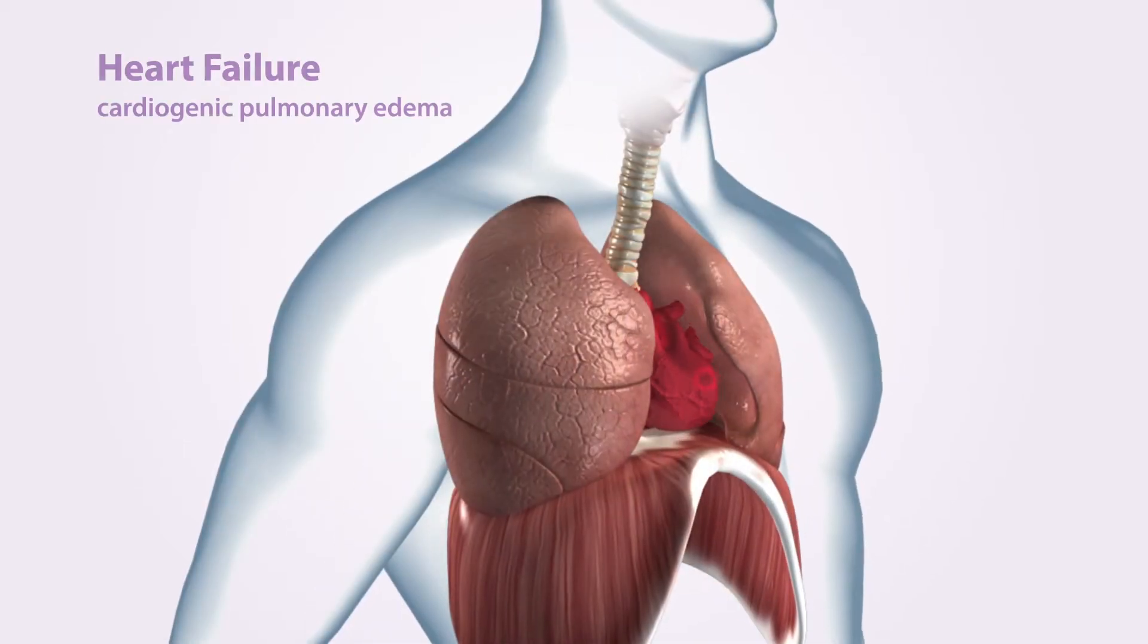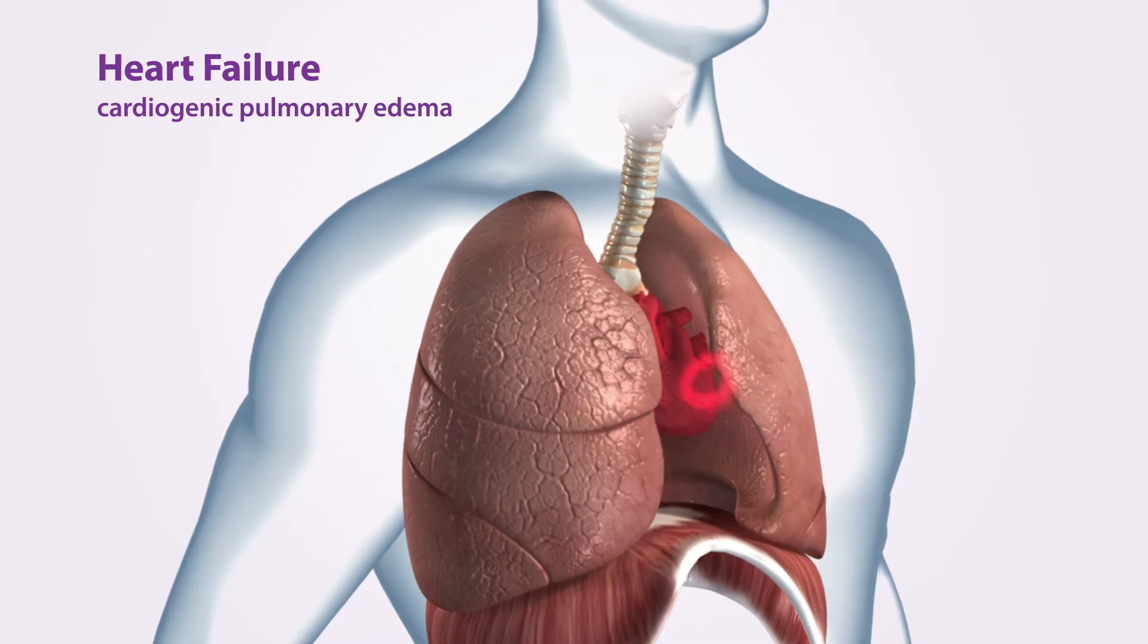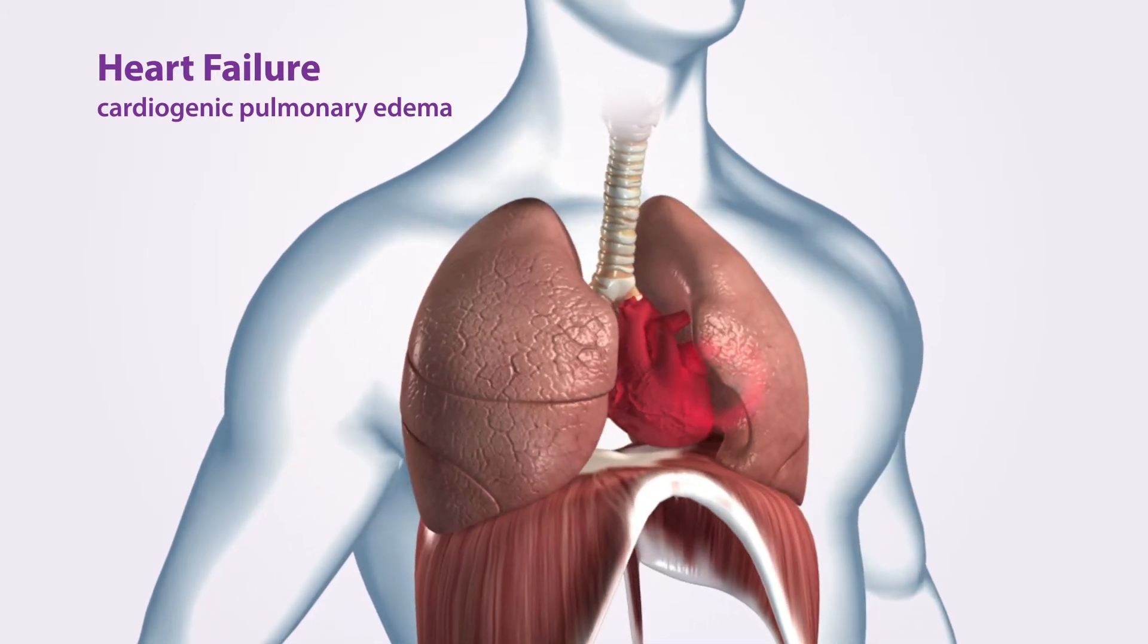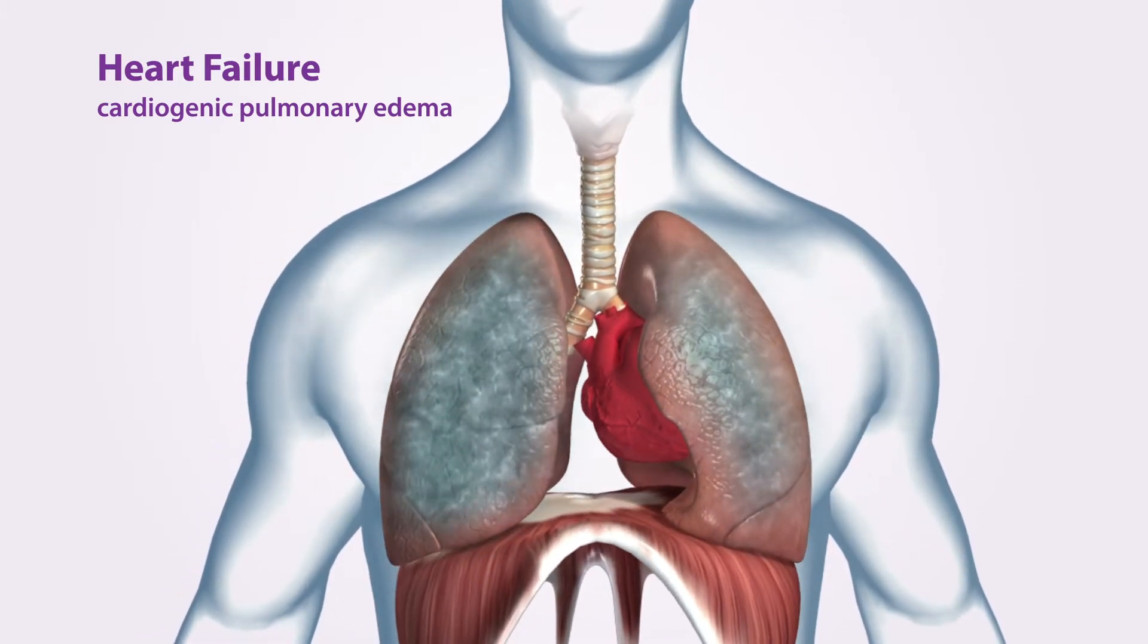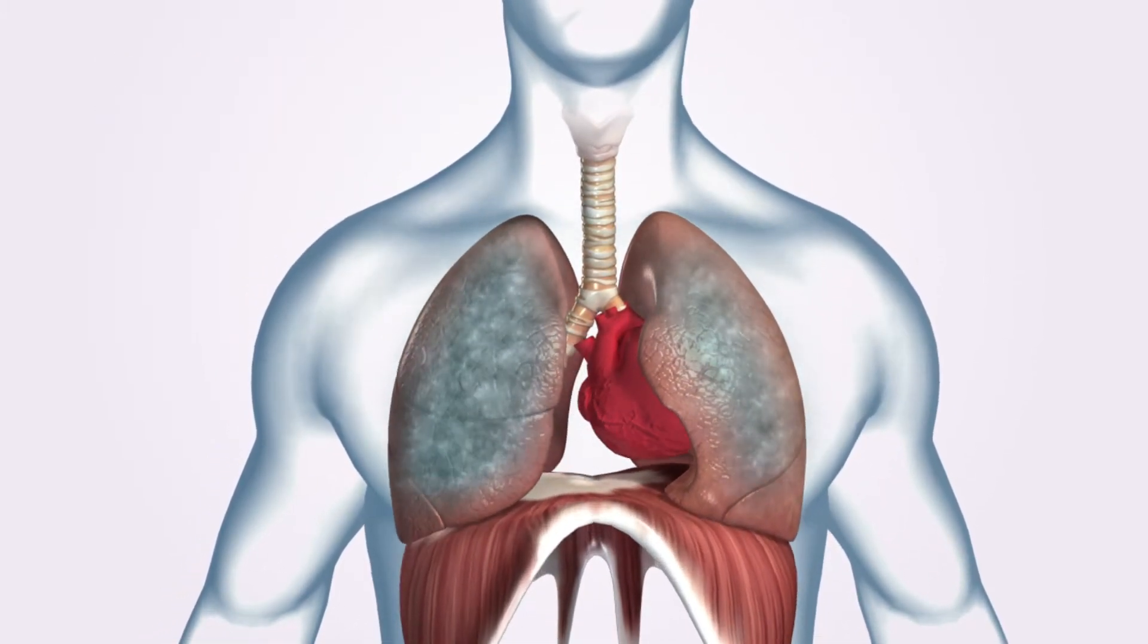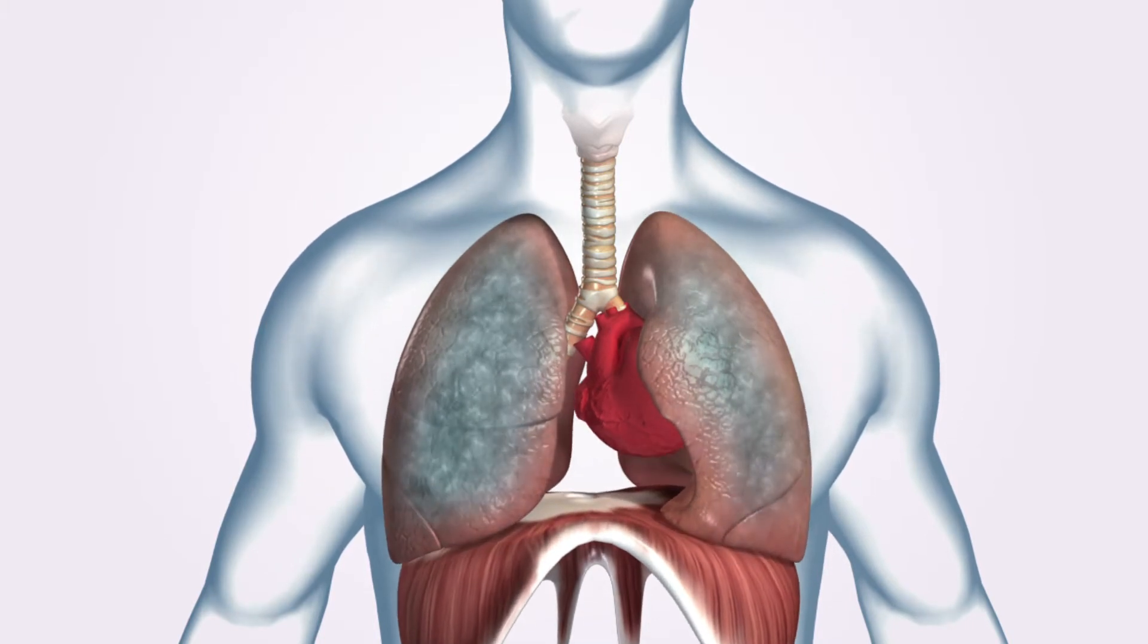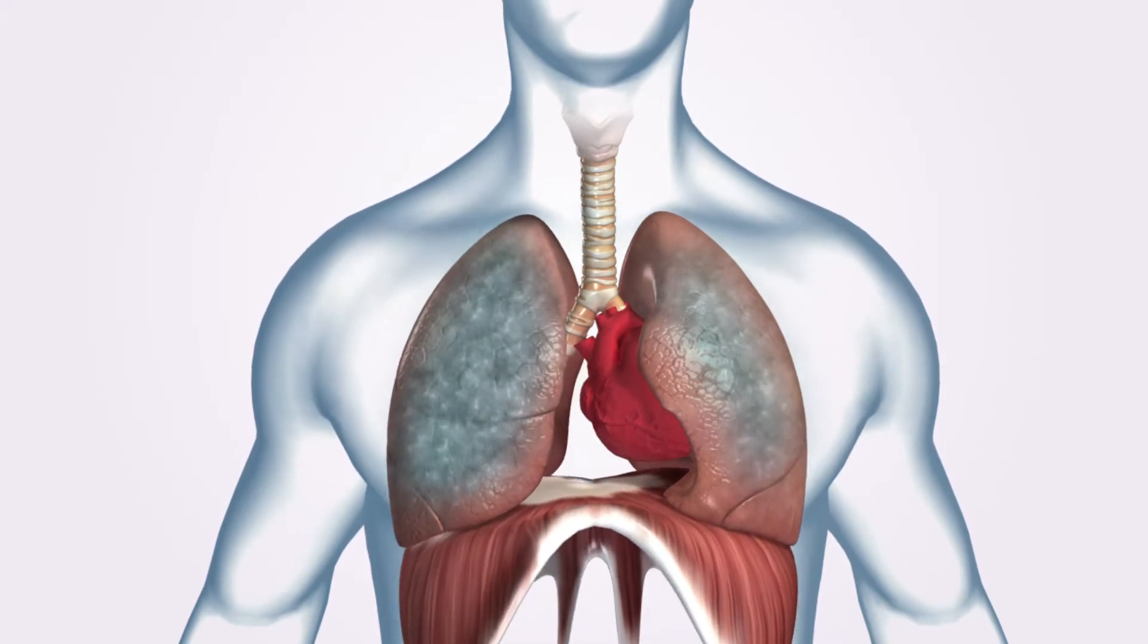A failing left coronary ventricle increases blood pressure in the blood vessels between your lungs and left ventricle. This increased pressure forces non-plasma fluids out from the blood and into the lung tissues. This can lead to pulmonary edema and is a trigger for onset of respiratory distress.